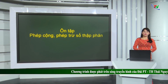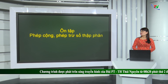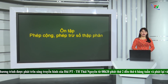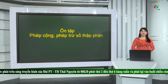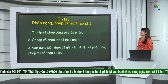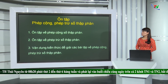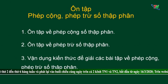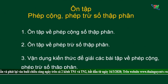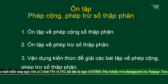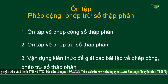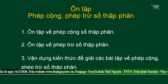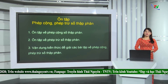Bây giờ chúng ta sẽ bắt đầu vào tiết học ôn ngày hôm nay. Trong tiết học ôn này, chúng ta sẽ đi ôn tập về phép cộng, phép trừ số thập phân. Gồm có 3 nội dung chính: 1. Ôn tập về phép cộng số thập phân; 2. Ôn tập về phép trừ số thập phân; 3. Vận dụng kiến thức để giải các bài tập về phép cộng, phép trừ số thập phân. Các em đã nắm rõ nội dung ôn tập chưa?